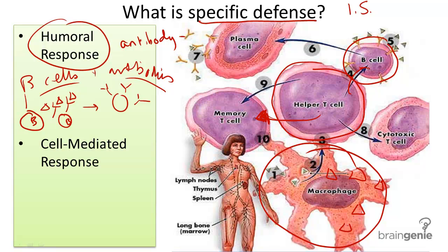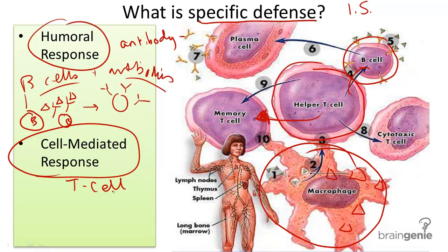The next type of response is called the cell-mediated response, and sometimes can be called the cytotoxic T cell response, even though the humoral response also involves T cells. Remember that there are different types of T cells. This one, called the cytotoxic T cell, is involved in the cell-mediated response.